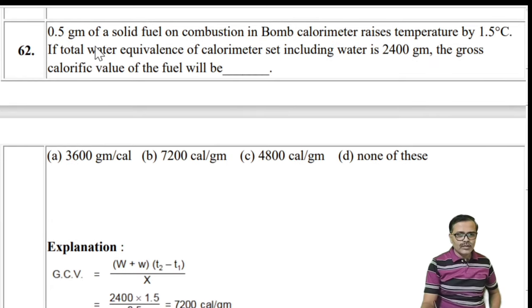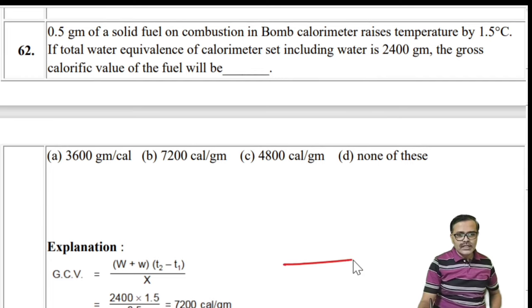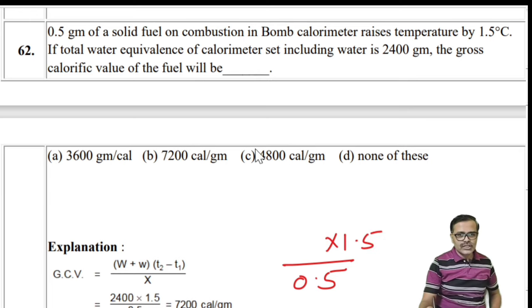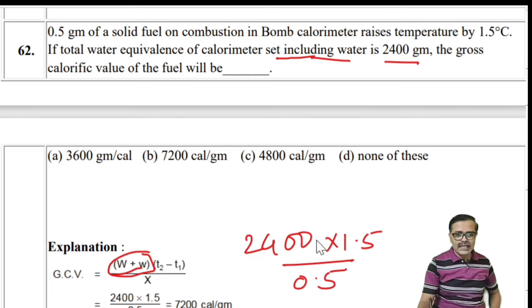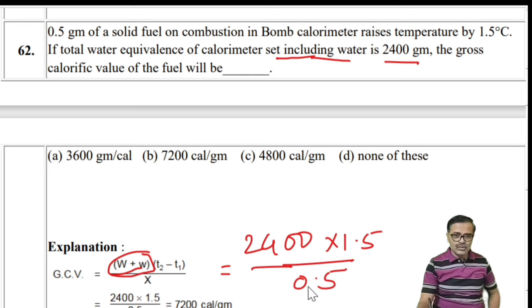Numerical on bomb calorimeter: 0.5 g coal, rise in temperature = 1.5°C, total water equivalent (W + w) = 2400 g. GCV = (W + w)(T2 − T1) / x = (2400 × 1.5) / 0.5 = 7200 kcal/kg. The answer is 7200 (second option).